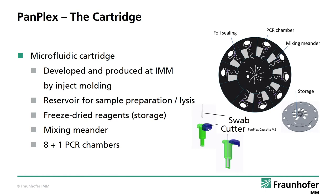Regarding the details: the microfluidic cartridge was developed and produced at IMM by injection molding. On top, the reservoir is placed, which is able to cut the tip of the swab and is filled with lysis buffer. Three dried reagents are stored in small chambers, and the reagents are dissolved by the sample and mixed in meander structures. Finally, the solution is pumped to the reaction chambers in which the amplification is performed and detection takes place. Nine different chambers are present, with the ability to run two PCR reactions per chamber because two different fluorophores can be detected.